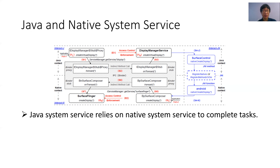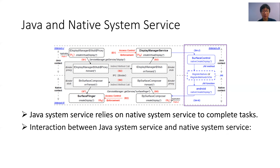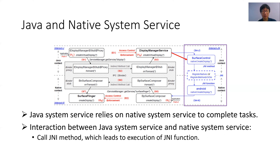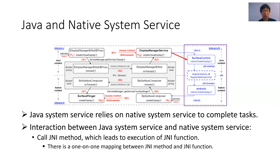Since native system services can provide more powerful functionality such as accessing hardware than Java system services, Java system services can rely on native system services to complete certain tasks, and this process includes two parts. First, the interface of Java system services calls a JNI method to get access to the native context. In this example, the remote interface createVirtualDisplay of display manager service calls a JNI method. Second, since there is a one-to-one mapping between JNI methods and JNI functions, the corresponding JNI function uses the native binder proxy to interact with the native system service. In this example, JNI method nativeCreateDisplay and its corresponding JNI function retrieves the BpSurfaceComposer object to request SurfaceFlinger service to create a secure virtual display.